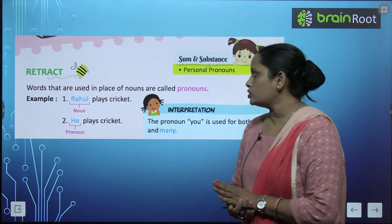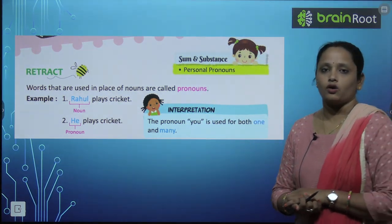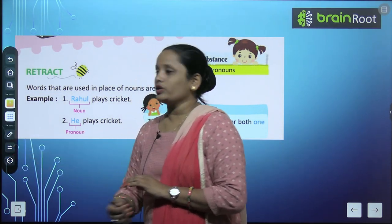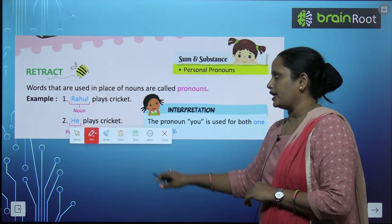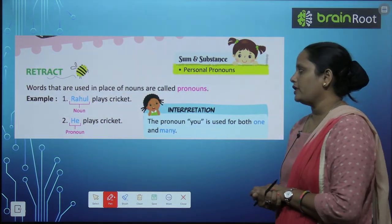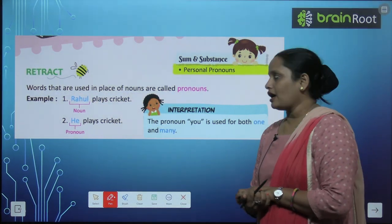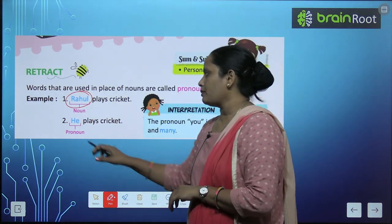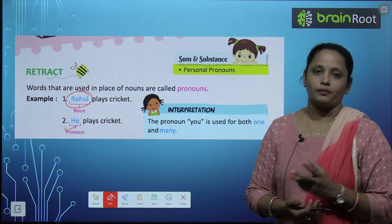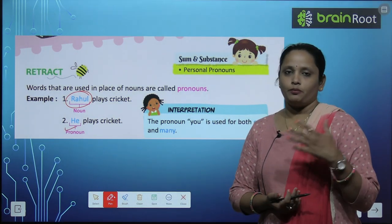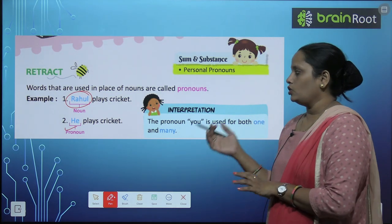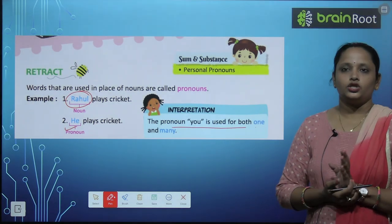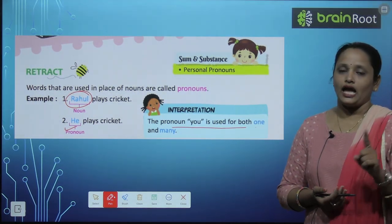Words that are used in place of a noun are called pronouns. Pronouns क्या होते हैं? वो words होते हैं जिन्हें noun की जगह पे लिखा जाता है. For example, Rahul plays cricket. Rahul एक noun है. अब Rahul की जगह पे हम एक pronoun insert करते हैं जिसको हम कहेंगे 'he'. Boys के लिए we use 'he'. So: he plays cricket. The pronoun 'you' is used for both one and many.